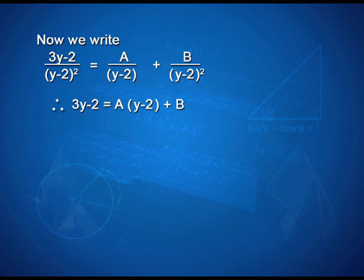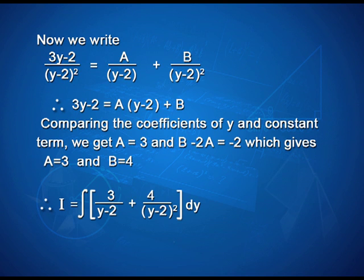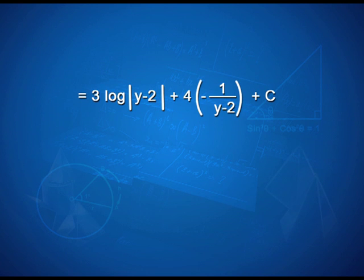Therefore, 3y - 2 = A(y-2) + B. Comparing coefficients of y and constant term, we get A = 3 and B - 2A = -2, which gives A = 3 and B = 4. Therefore I = integral [3/(y-2) + 4/(y-2)²] dy = 3·integral dy/(y-2) + 4·integral dy/(y-2)², which equals 3 log|y-2| + 4·(-1/(y-2)) + C.